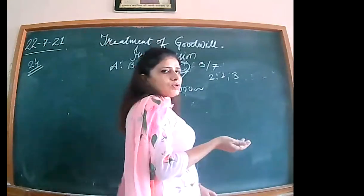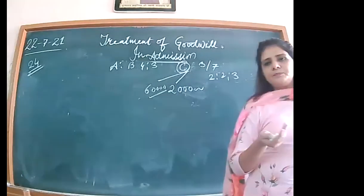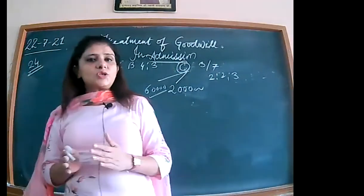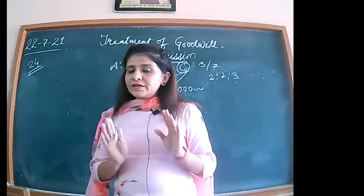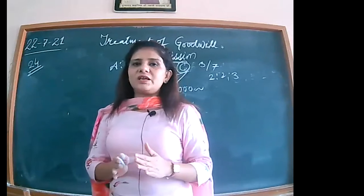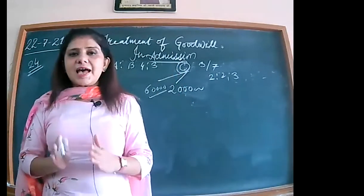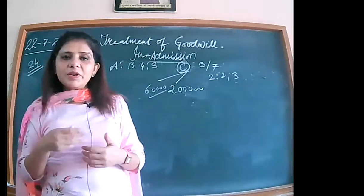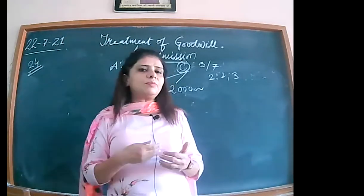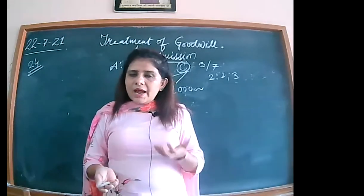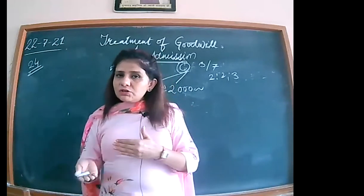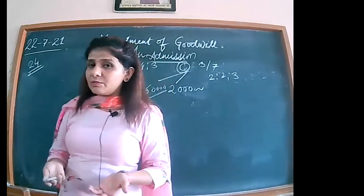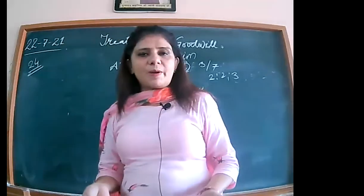Sometimes the incoming partner brings his share of goodwill in cash, but it is not essential that he always does so. Sometimes he brings his share of goodwill in kind — he can bring stock, machinery, or furniture. The journal entry would then be: stock account debited or machinery account debited to premium for goodwill. After that, the second entry remains the same: premium for goodwill account debited to the sacrificing partners.